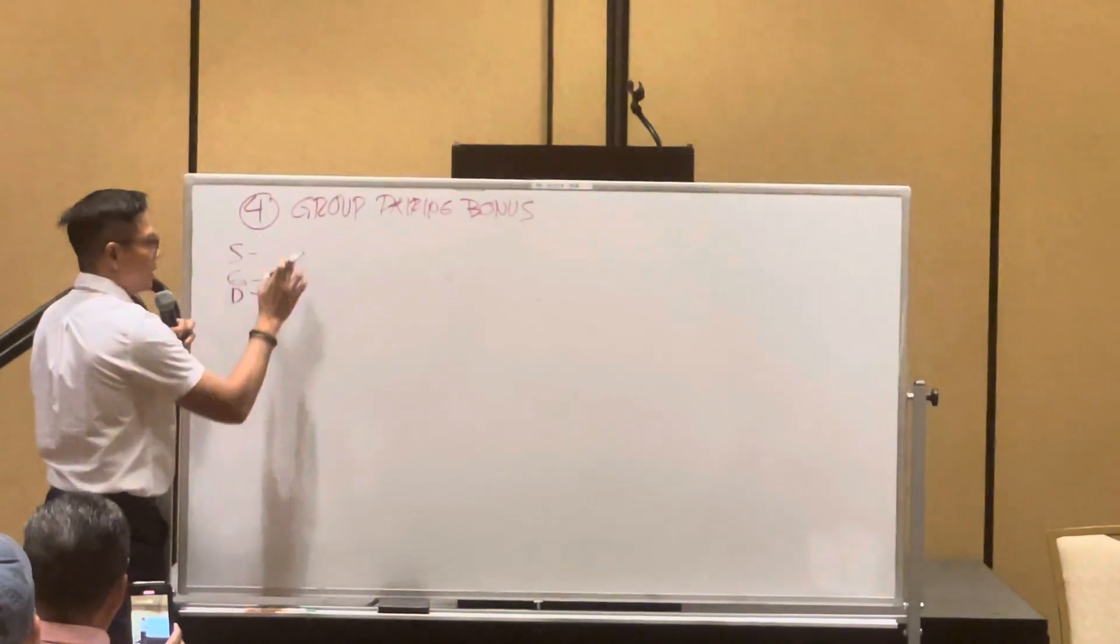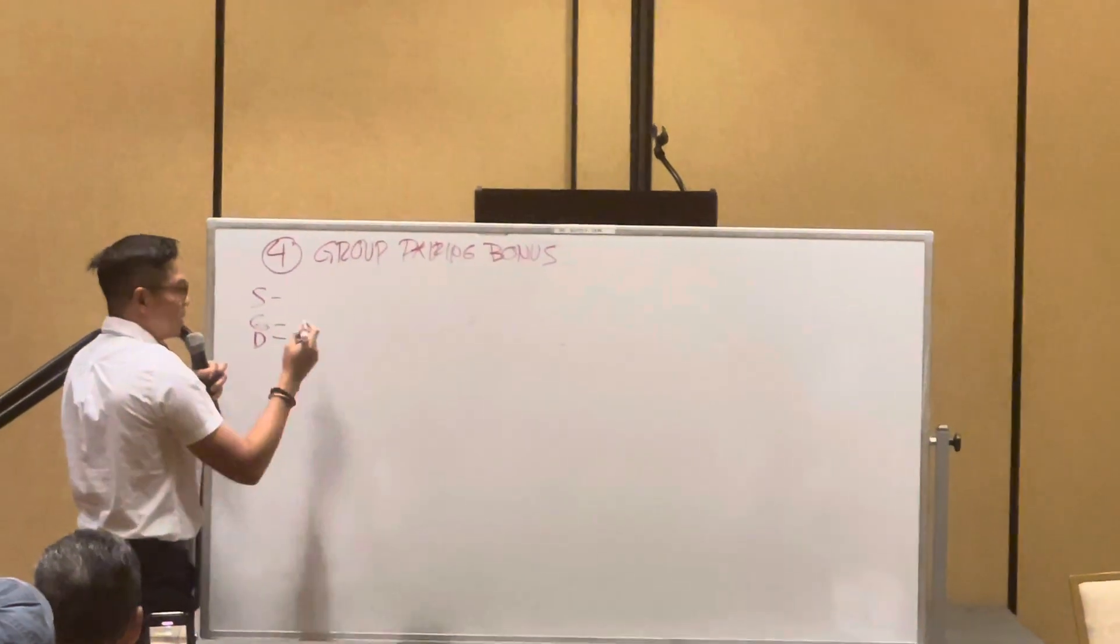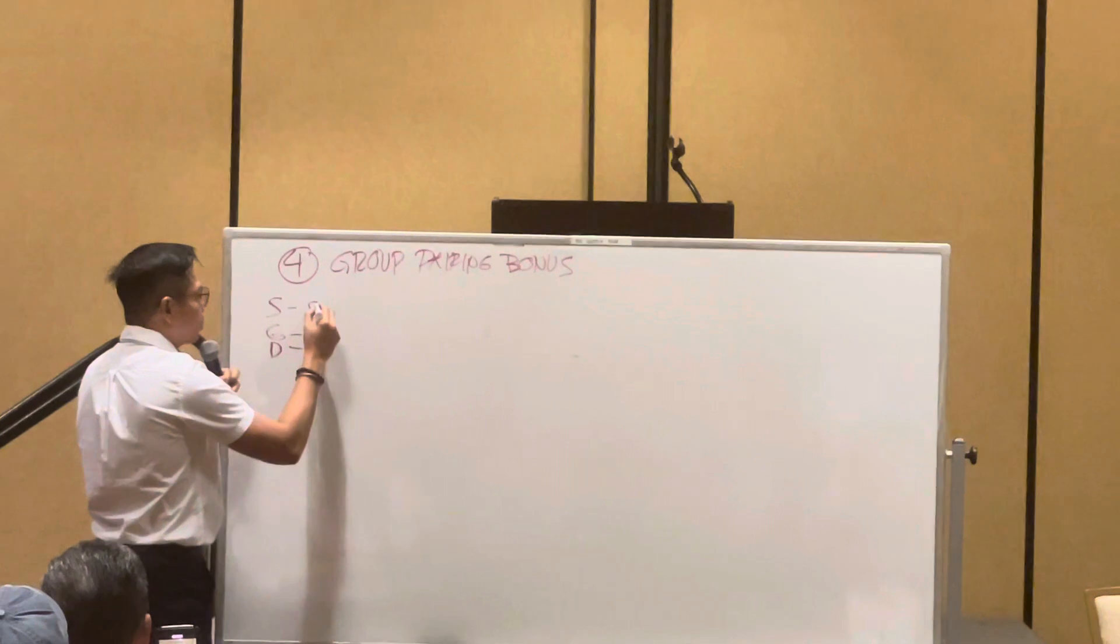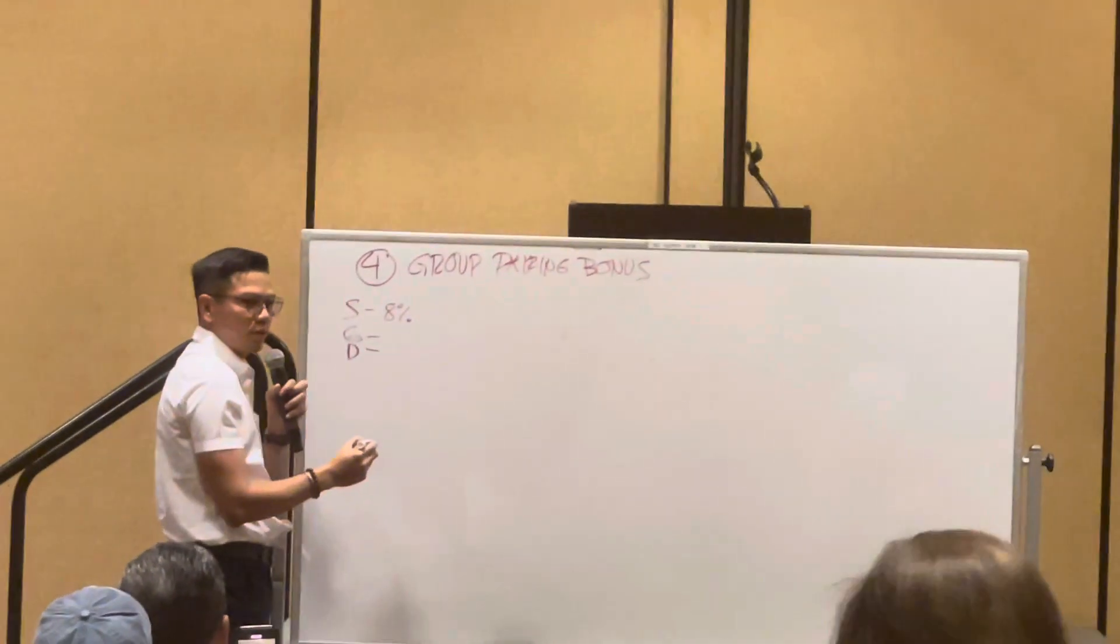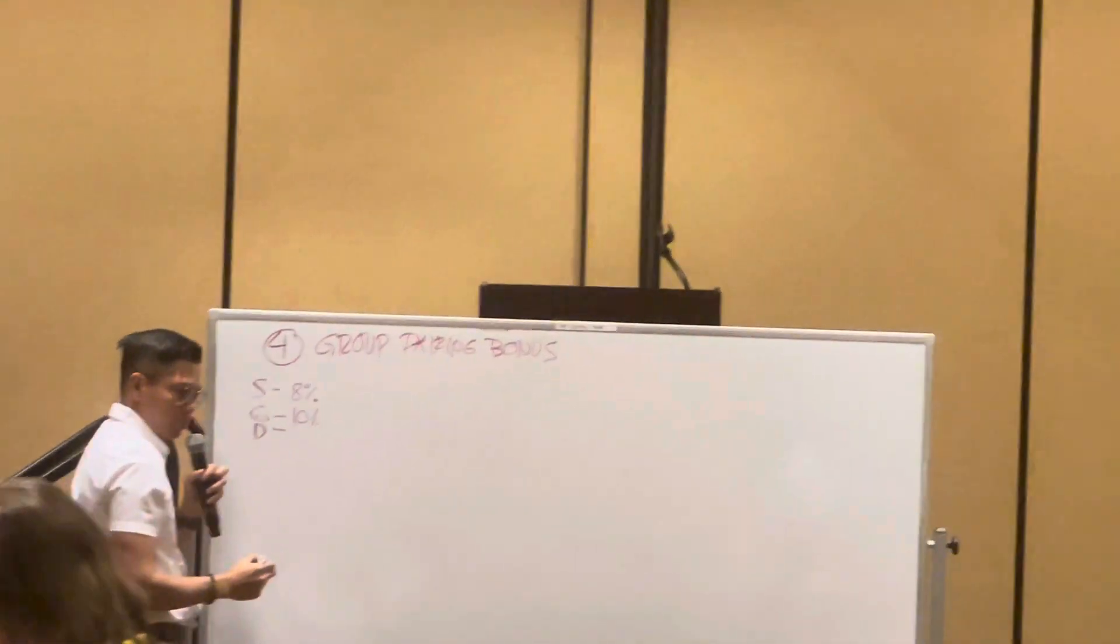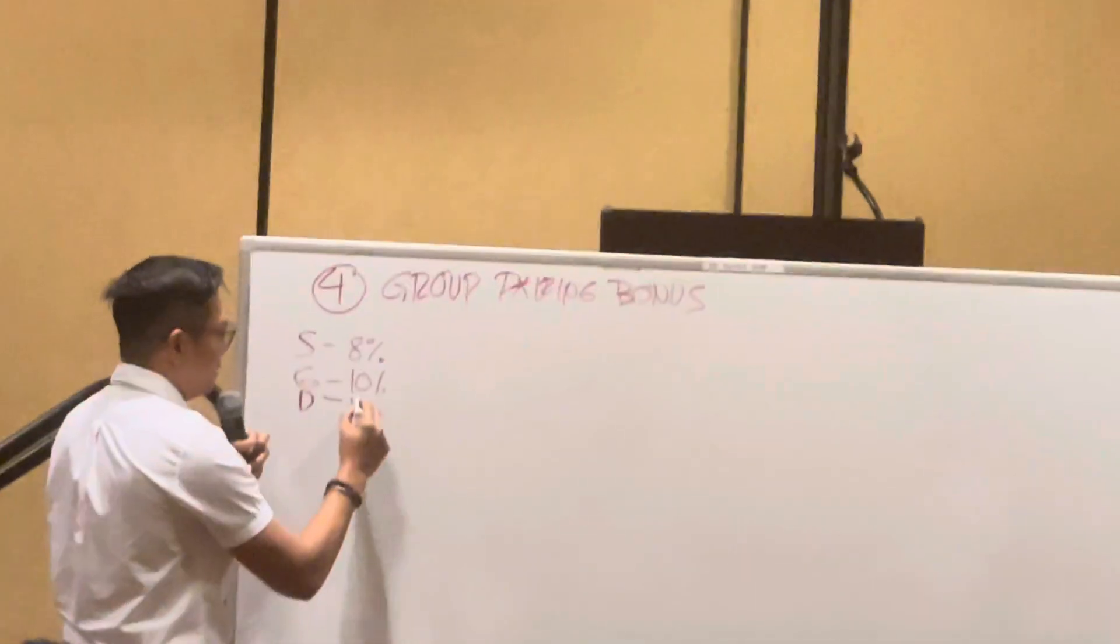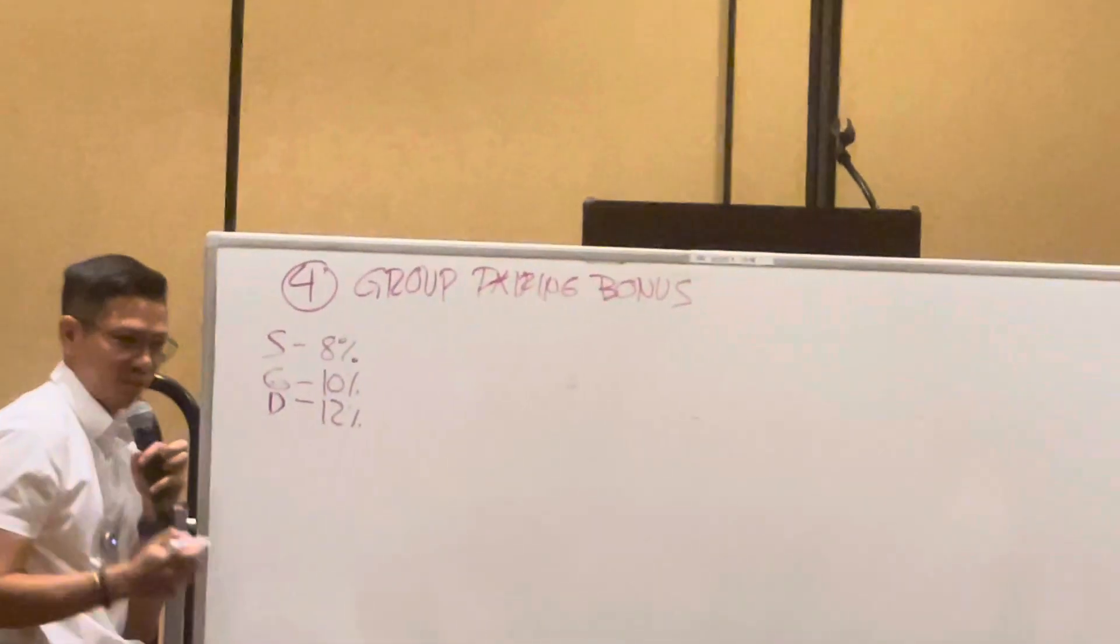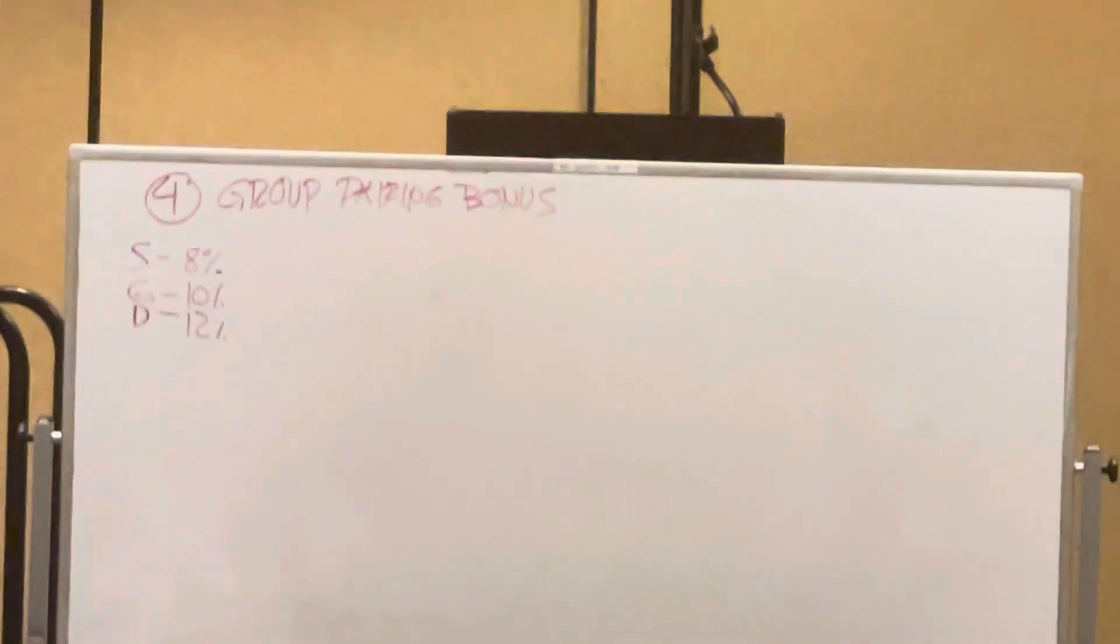A silver here in the Group Pairing Bonus is only paid at 8%. We'll talk more about that. Gold, 10%. Diamond, 12%. Yes or yes?